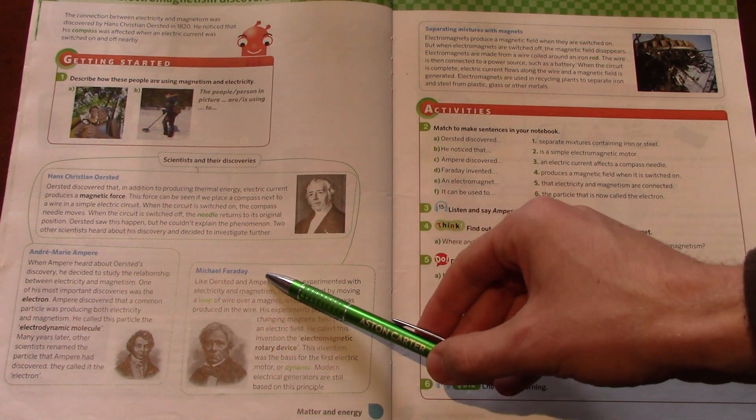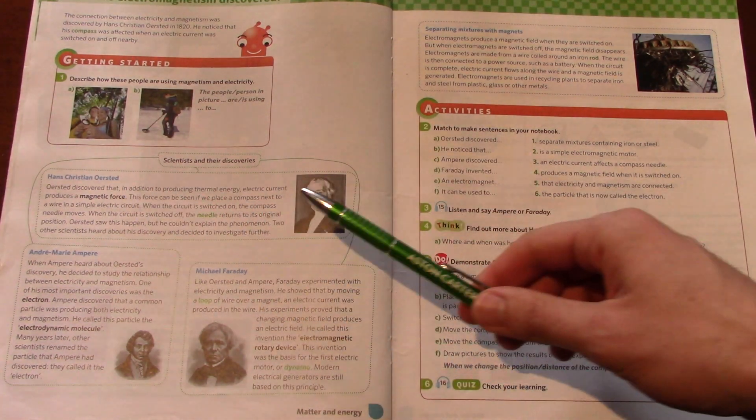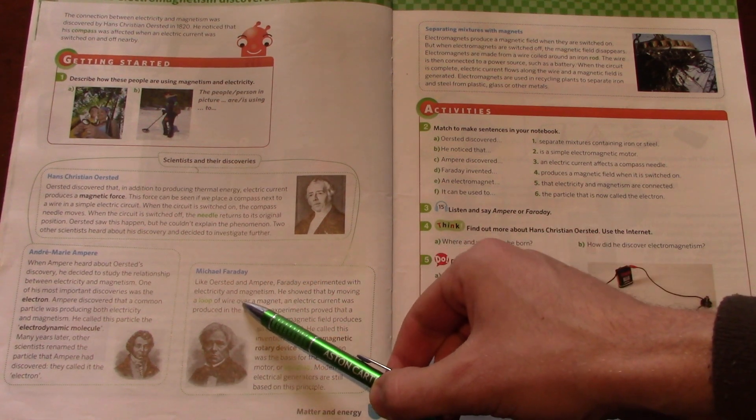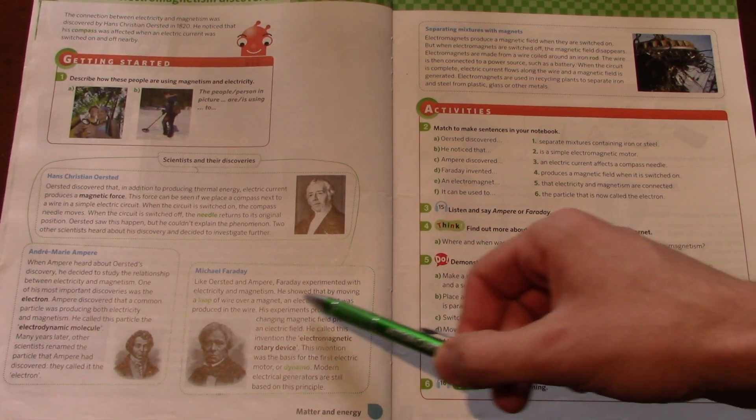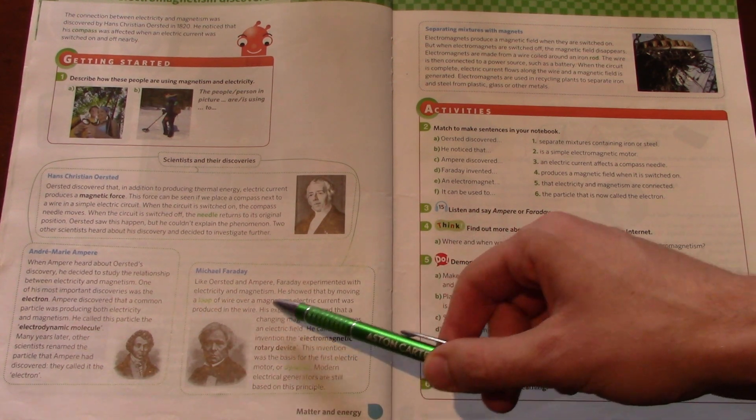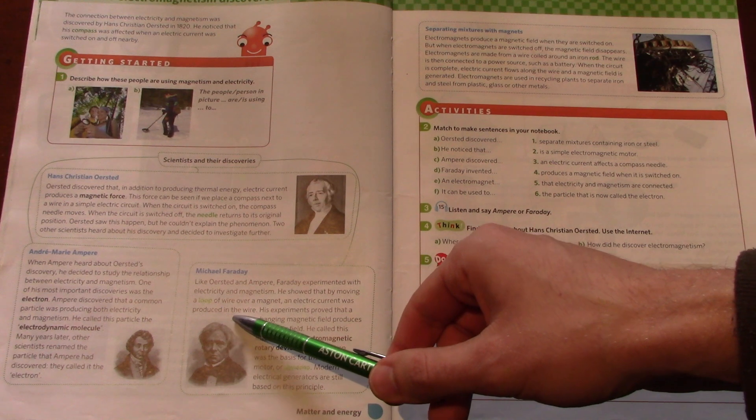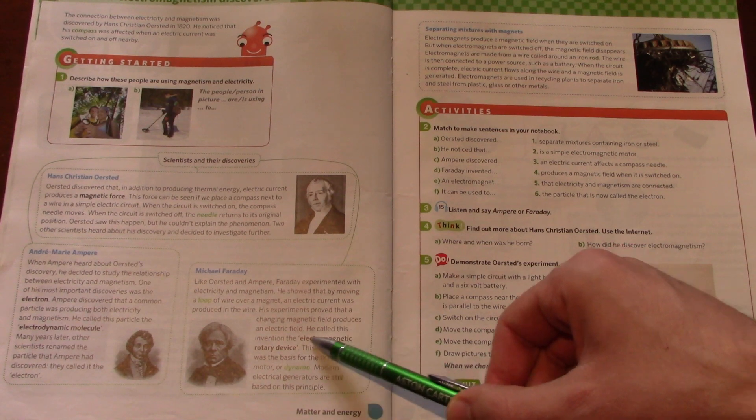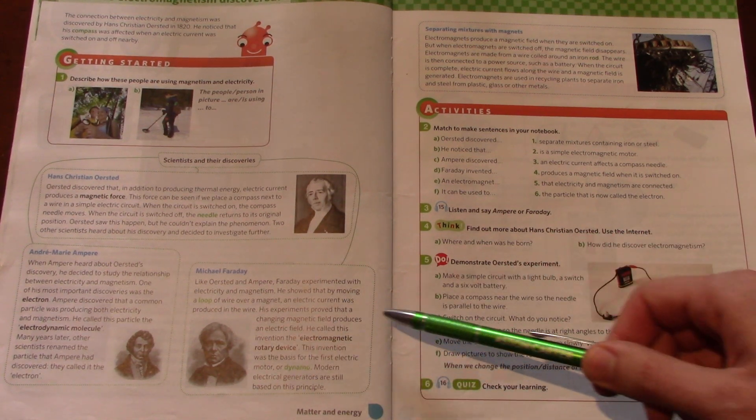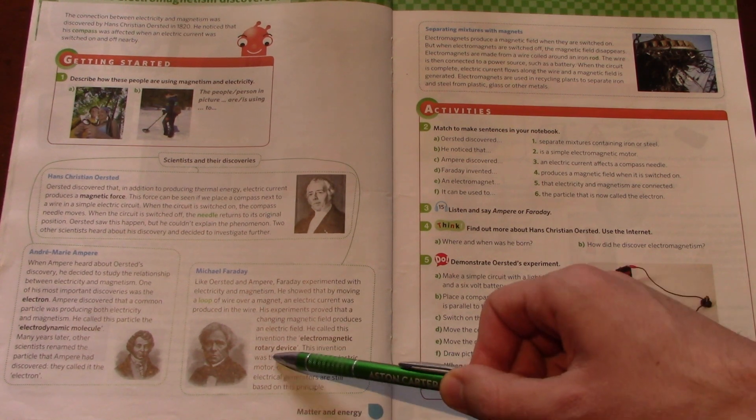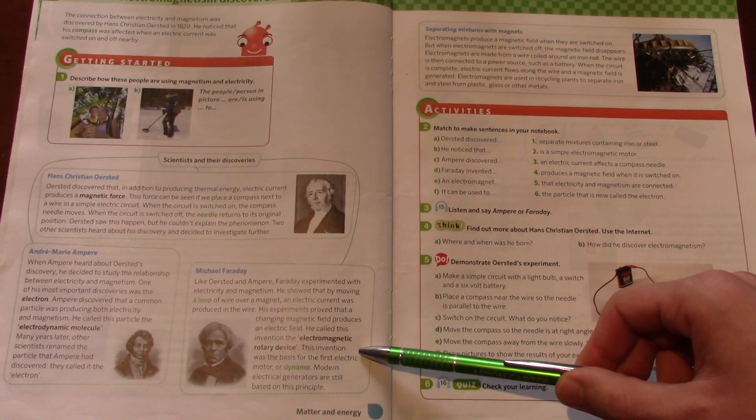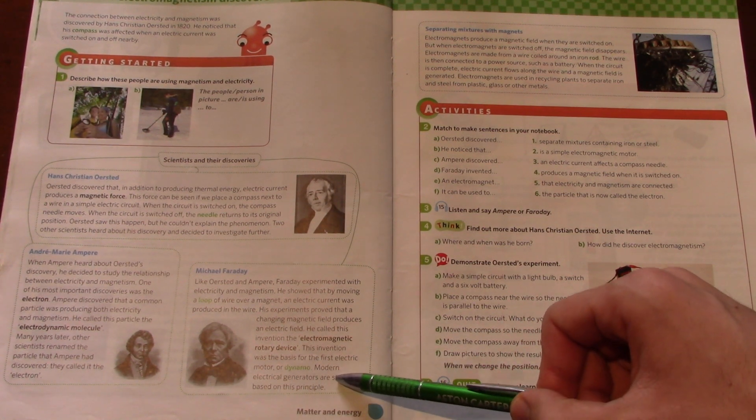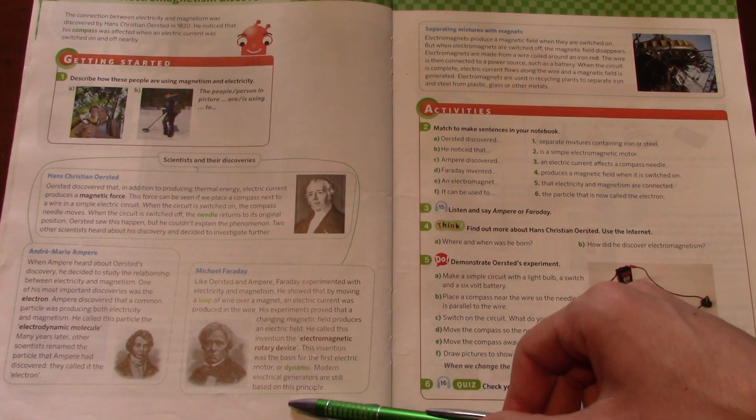Michael Faraday was the other scientist that extended on Ørsted's study. So like Ørsted and Ampère, Faraday experimented with electricity and magnetism. He showed that by moving a loop of wire over a magnet, an electric current was produced in the wire. His experiments proved that a changing magnetic field produces an electric field. He called this invention the Electromagnetic Rotary Device. This invention was the basis for the first electric motor, or dynamo. Modern electrical generators are still based on his principle.